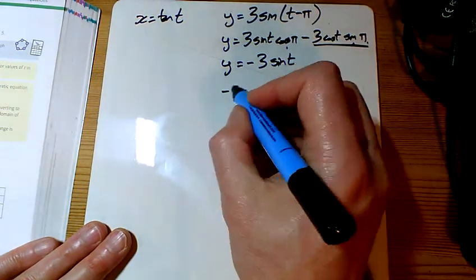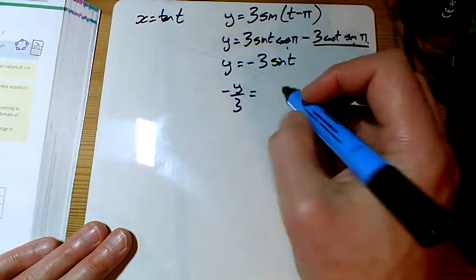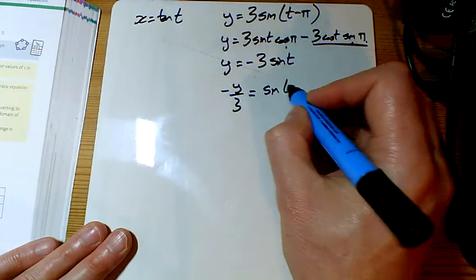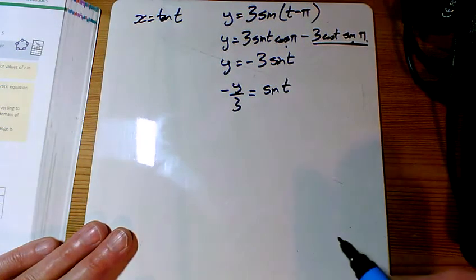So if I divide both sides by minus 3, I can tell you that sine t is y over 3.